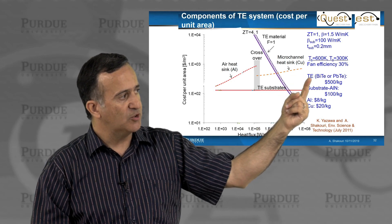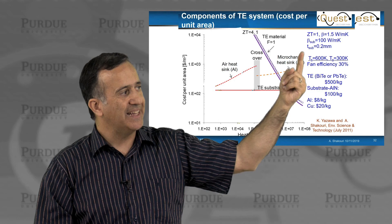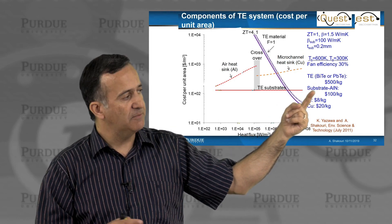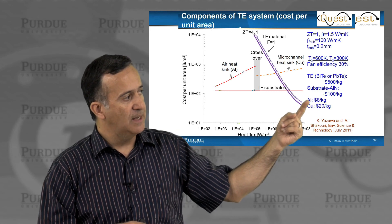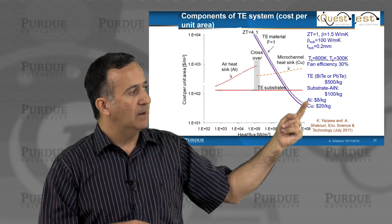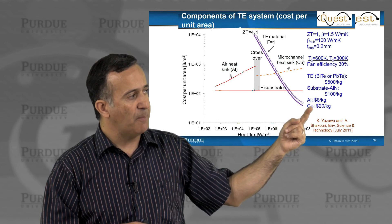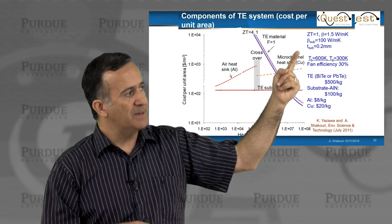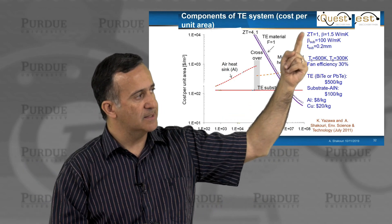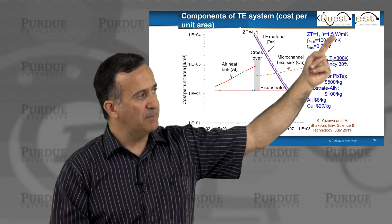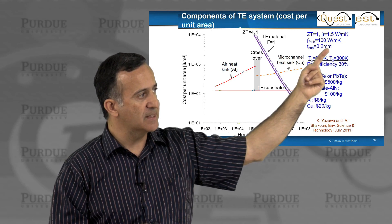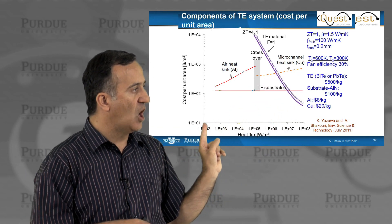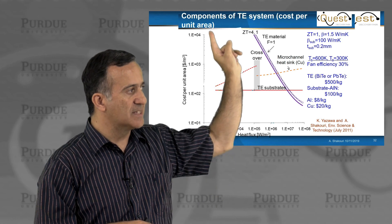We assume the thermoelectric material to be bismuth telluride / lead telluride at this temperature range, at about $500 per kilogram. We assume a substrate — in this case aluminum nitride — at a given cost. We also have either an aluminum heat sink or a copper heat sink. These were the costs in 2011. We assume a ZT of 1, thermal conductivity of 1.5 W/m·K, substrate thermal conductivity as listed, and a substrate thickness of about 0.2 mm.